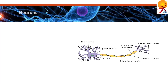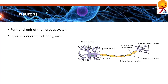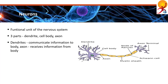The neuron is the functional unit of the nervous system. It has three parts: dendrite, cell body and axon. Dendrites receive information from another cell and transmit the message to the cell body. The cell body contains the nucleus, mitochondria and other organelles. The axon conducts messages away from the cell body.